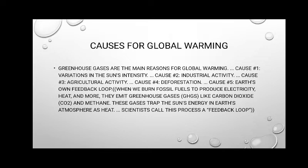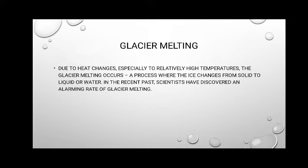When we burn fossil fuels like carbon to produce electricity and heat, they emit greenhouse gases like carbon dioxide (CO2) and methane. These gases trap the sun's energy in Earth's atmosphere as heat. Scientists call this process a feedback loop. Due to heat changes, especially at high temperatures, glacier melting occurs.